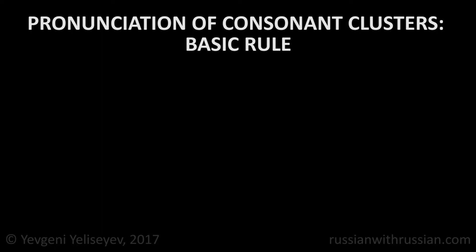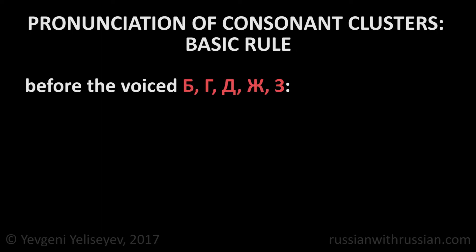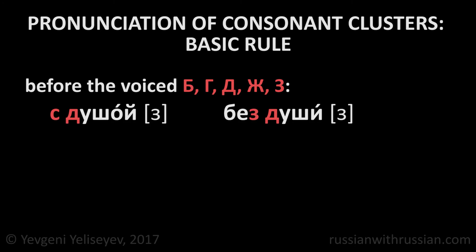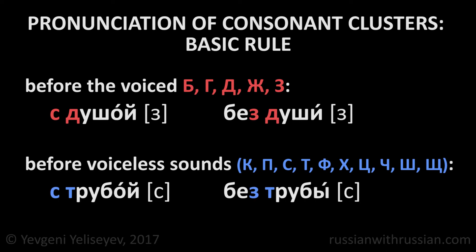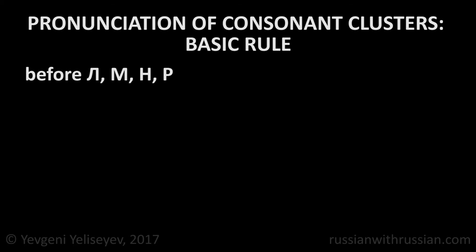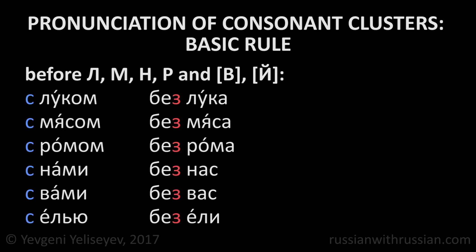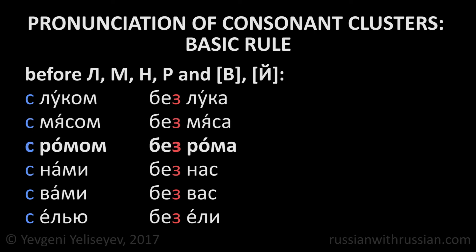All that I said is true for prepositions. Before the voiced sounds Б, Г, Д, Ж, З, we pronounce voiced consonants — с душой, без души. Before voiceless sounds, we pronounce voiceless consonants — с трубой, без трубы. Before the letters Л, М, Н, Р, and before the sounds В and Й, we pronounce the same things that we write — с луком, без лука; с мясом, без мяса; с ромом, без рома; с нами, без нас; с вами, без вас; с елью, без ели.